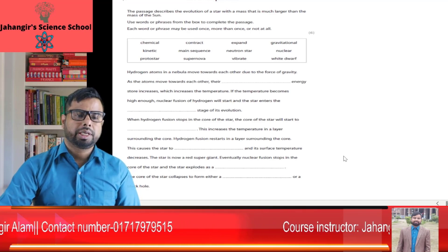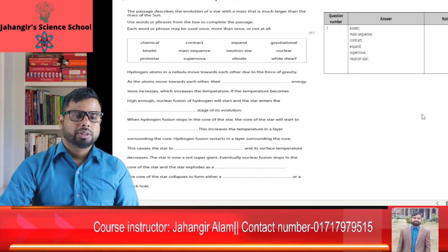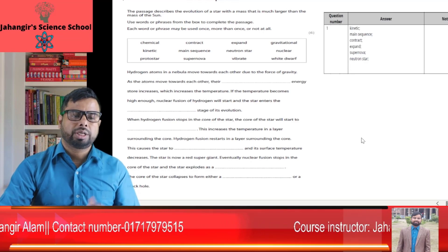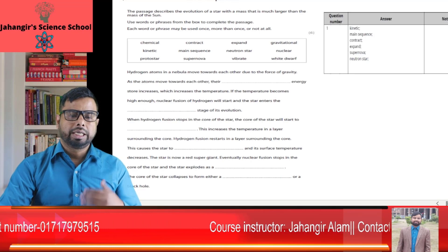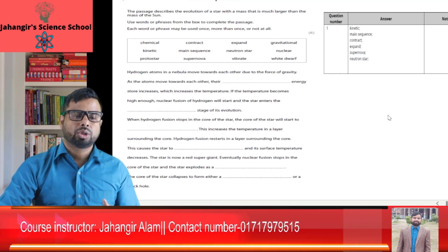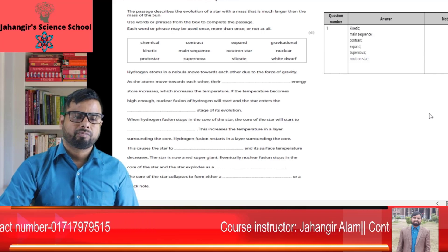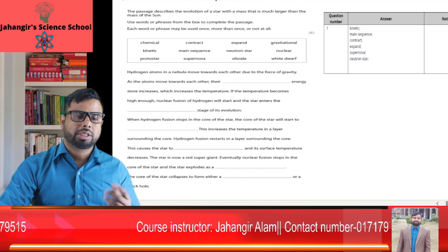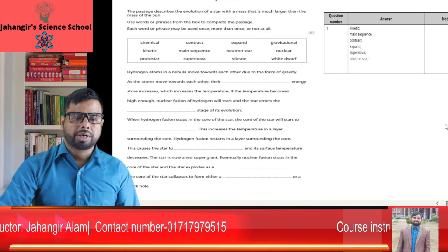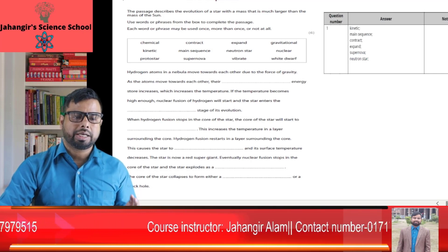Hydrogen atoms in a nebula move towards each other due to the force of gravity. As the atoms move towards each other, their kinetic energy stores increase, which increases the temperature. If the temperature becomes high enough, nuclear fusion of hydrogen will start and the star enters the main sequence stage of its evolution. When hydrogen fusion stops in the core of the star, the core will start to contract, increasing the temperature in a surrounding layer. Hydrogen fusion then starts in that layer, causing the star to expand and its surface temperature to decrease. The star is now a red supergiant.